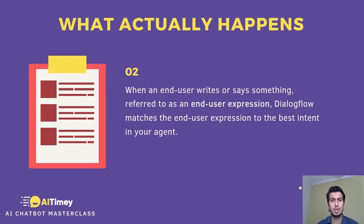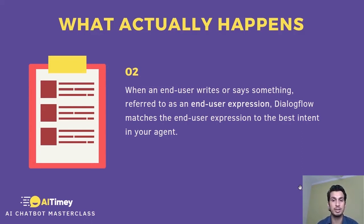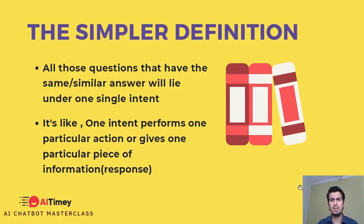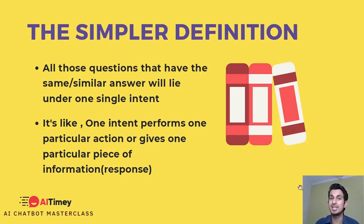So let's understand what's actually happening. When an end user writes or says something — referred to as end user expression — Dialogflow matches the end user expression to the best intent in your agent. Whenever a user is speaking something to your assistant or typing out to the assistant expecting a reply, Dialogflow actually finds that in the intents. And the answer from the best matched intent is what your user is going to see.